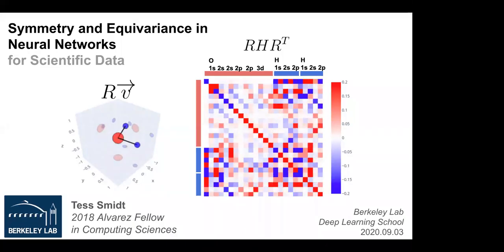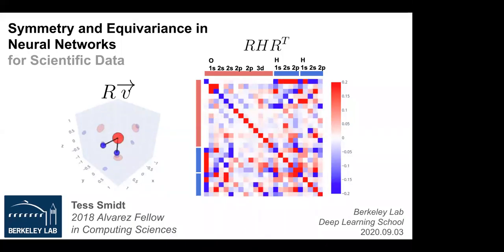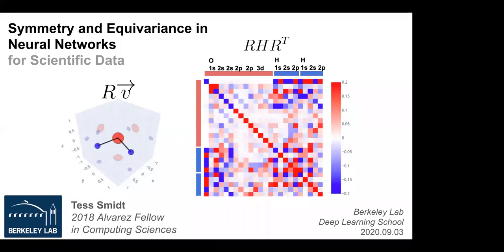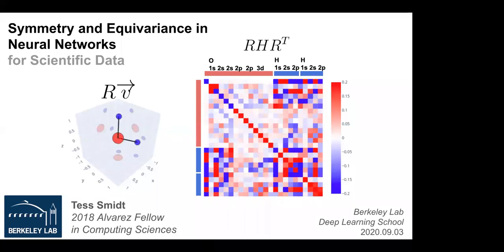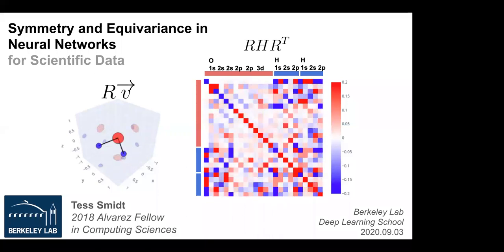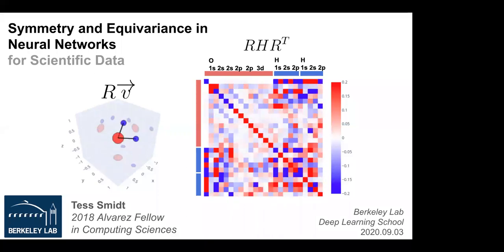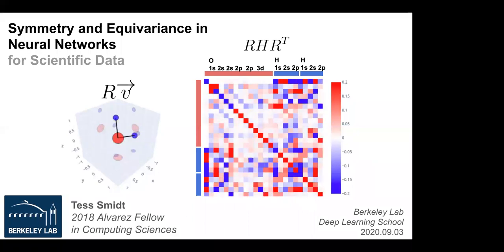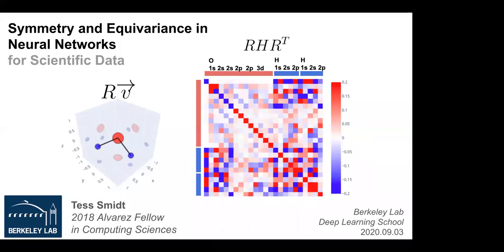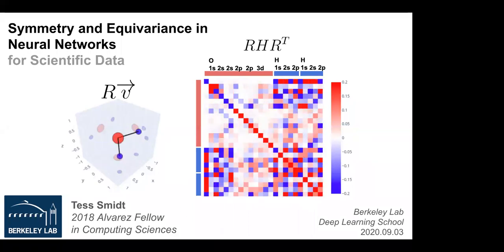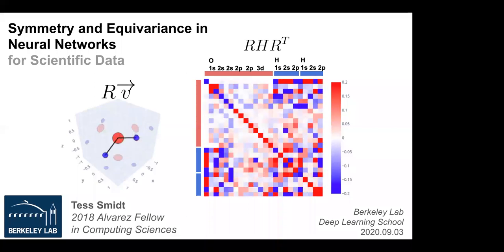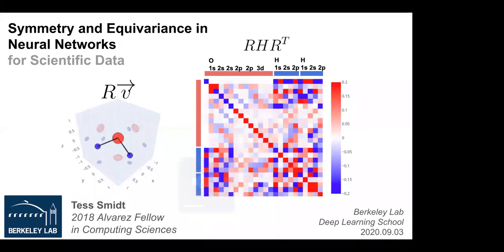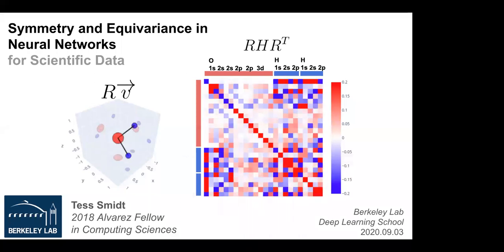Good morning, everyone. Welcome again to another Deep Learning for Science School. I'm really excited to have Tess Smet with us today to talk about symmetry and equivariance in neural networks, one of the most important topics we need to address to incorporate physics and physical knowledge in our neural networks and architecture.